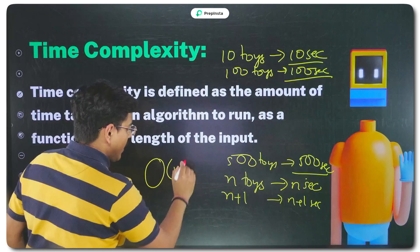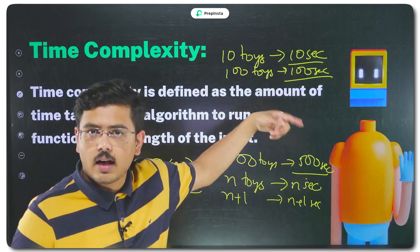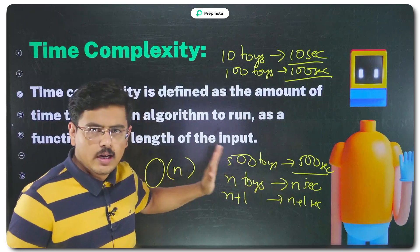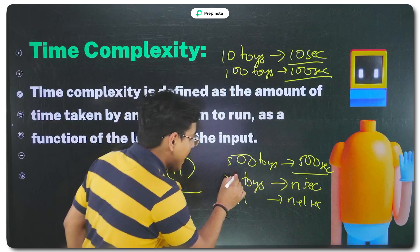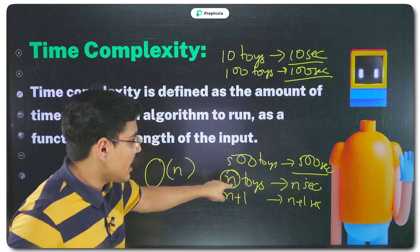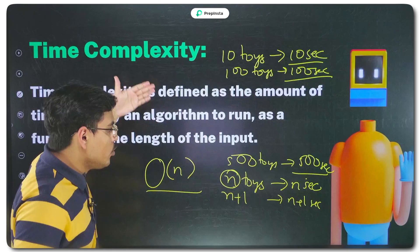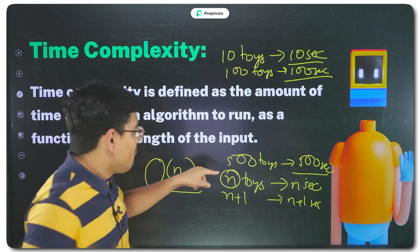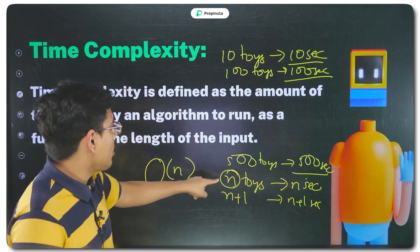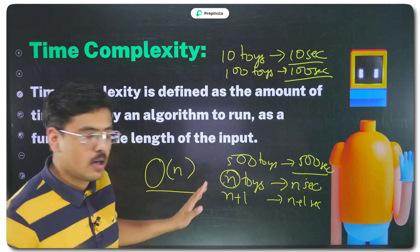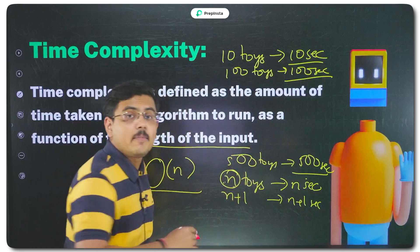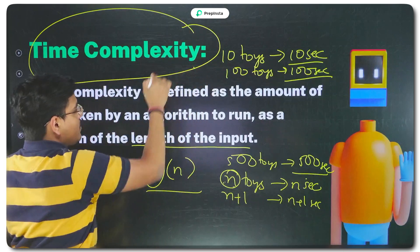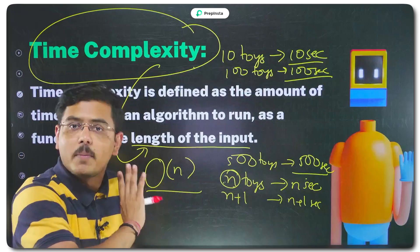Here we can say it is of order n, or Big O of n. When the time is expressed in terms of the input size n, that is called time complexity. The length of the input is the independent variable — it can be anything — but the time complexity is the dependent variable; it is dependent on the length of the input. That is time complexity.